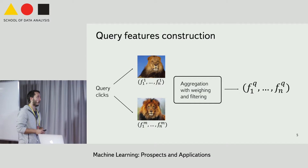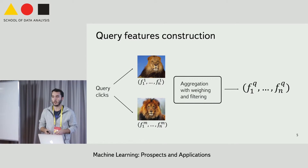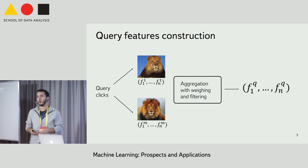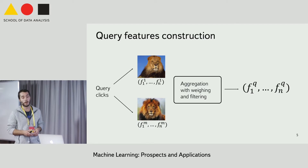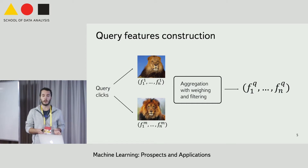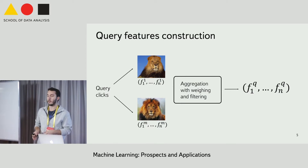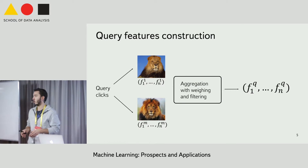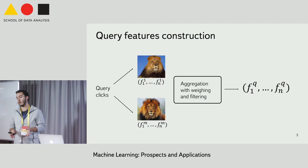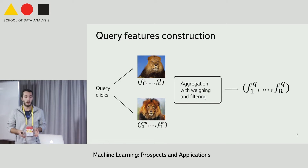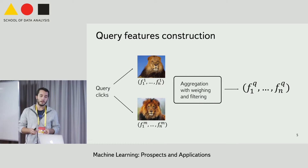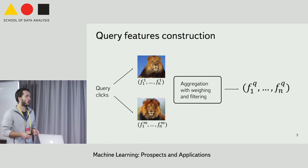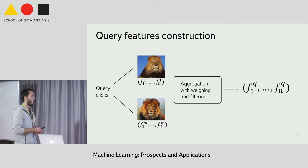To do this, we considered user clicks on search results for a particular query. Each search result is represented by some image, and that image is represented by some feature vector.